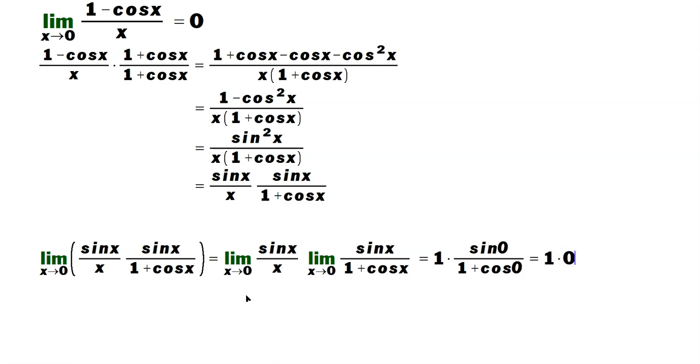So it's going to be 1 times 0, and then 1 plus cosine of 0. Cosine of 0 is 1, 1 plus 1 is 2. Nevertheless, 0 is involved, so you end up with 0.